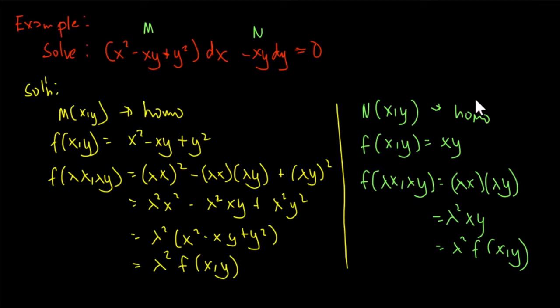Since both M and N are homogeneous, we can use the method of solving differential equations with homogeneous coefficients. We now go to the solution itself. The very first thing to do is to test — because if the given equation is not homogeneous, meaning the coefficients are not homogeneous functions, we cannot use this technique to arrive at the general solution.